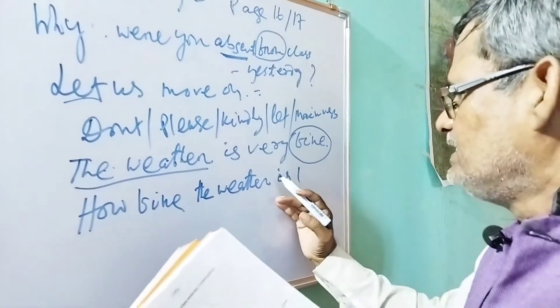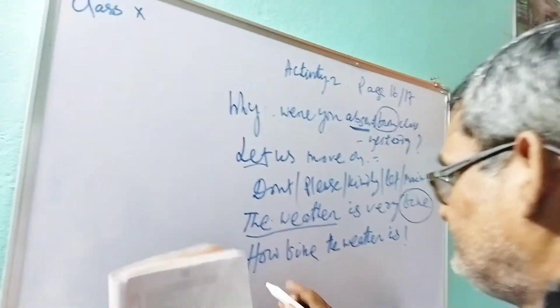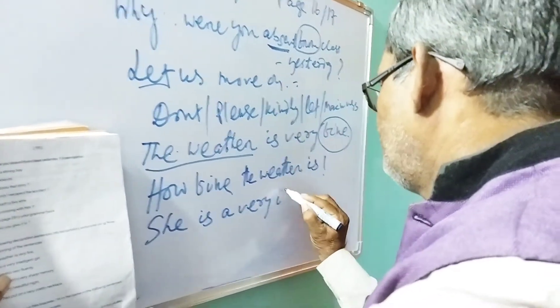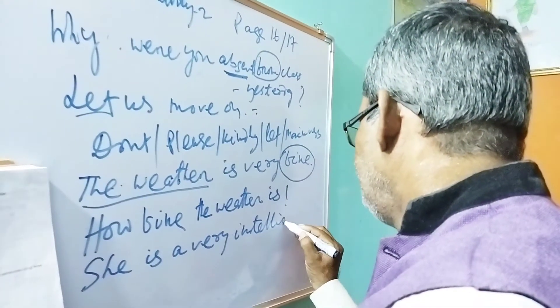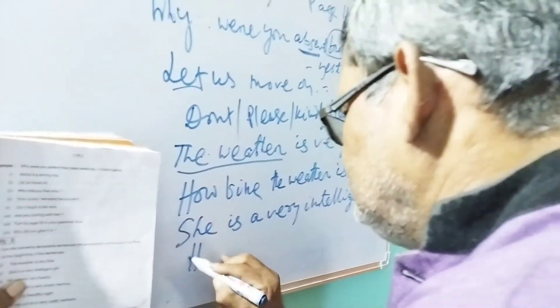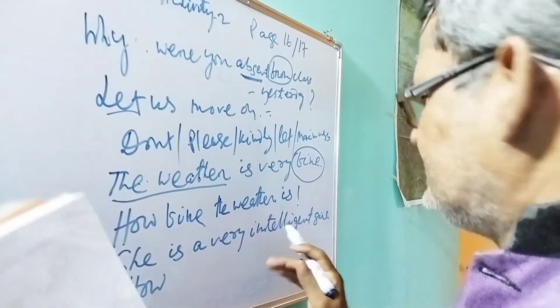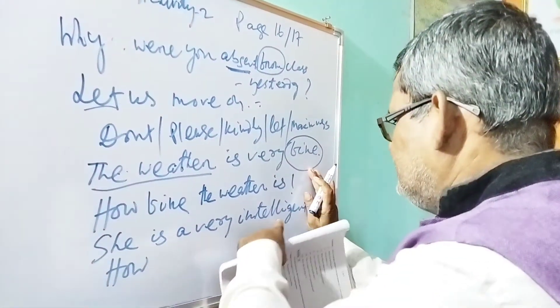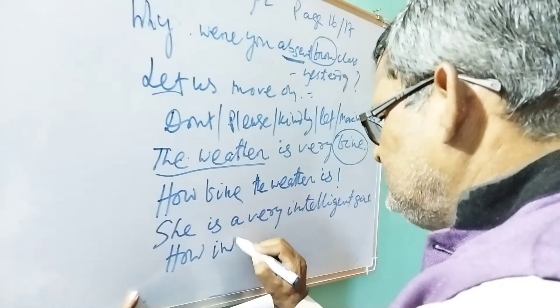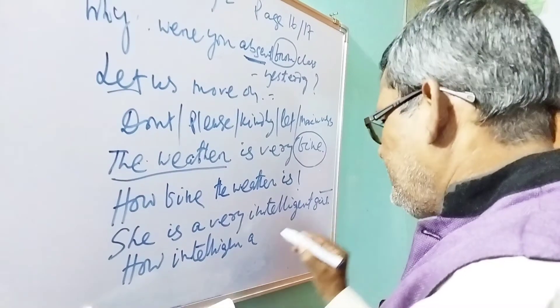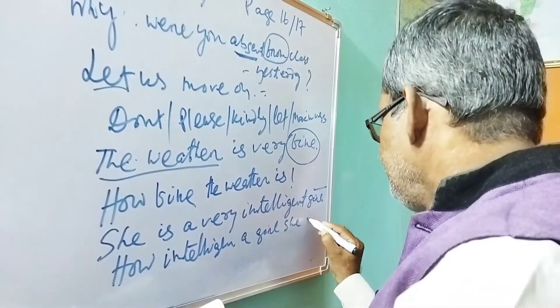Next: 'She is a very intelligent girl.' Find the adjective after 'very' — that is 'intelligent.' Bring it here: 'How intelligent a girl she is!' — put the exclamatory mark. Third one: 'He speaks very quickly' — 'How fluently he speaks!' And: 'She has got a very sharp memory' — 'What a sharp memory she has got!' or 'How sharp a memory she has got!'